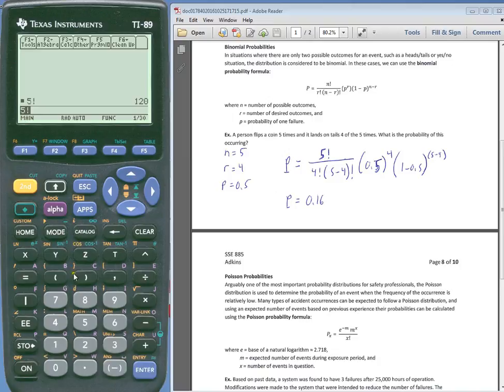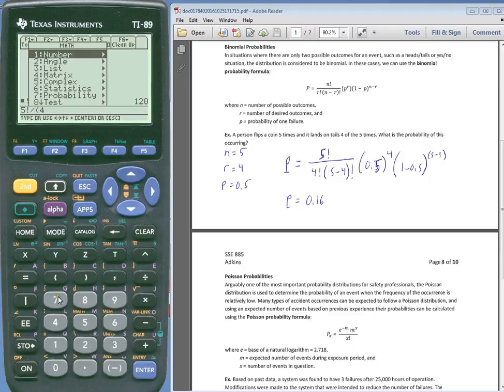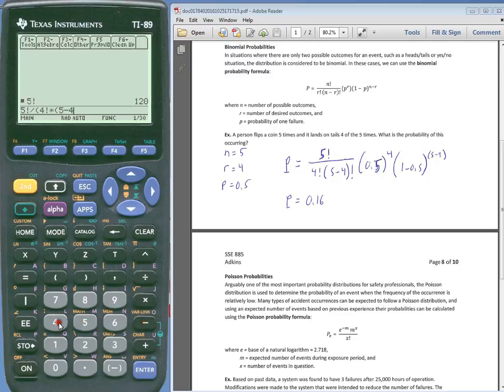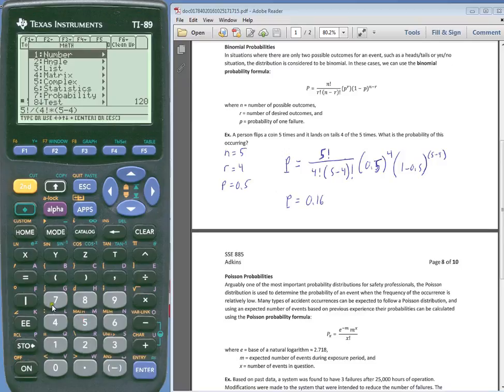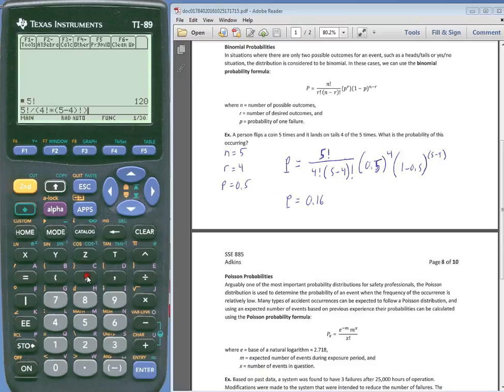So we'll do five factorial, go through this process again, seven, one. And then we're going to divide that by the quantity, the whole denominator. So it's going to be four factorial, times the quantity, five minus four, factorial of that. All right. And then close that parenthesis.